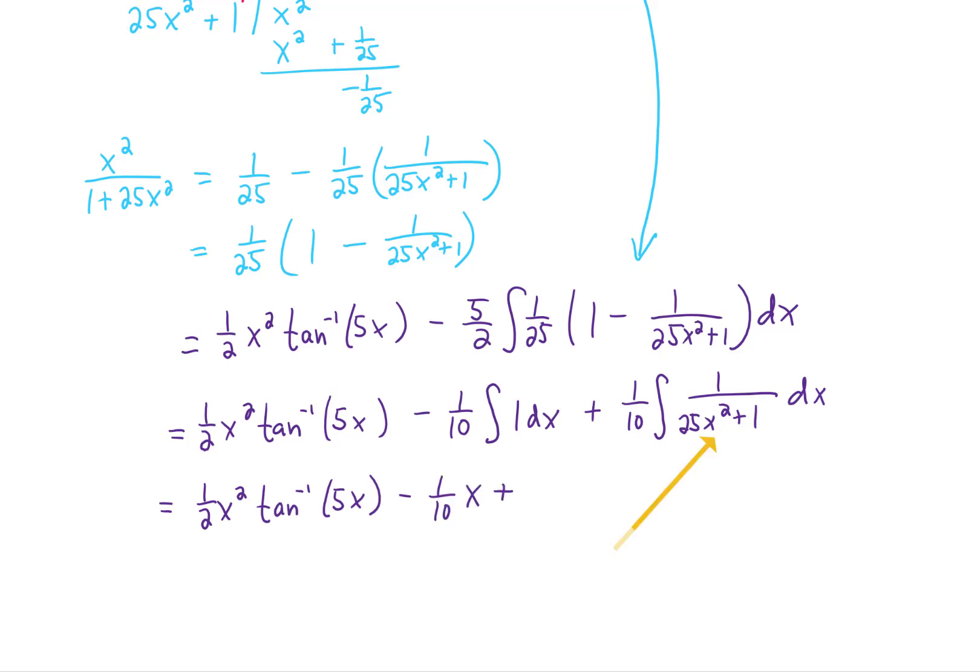But this last integral looks to me like an arctangent integral, or an inverse tangent integral. That would be written a little bit more nicely if we replaced the 25x squared with a quantity of 5x squared. What that then suggests is that we can do a u substitution using u equals 5x, du is then 5 dx, or one-fifth du is dx.